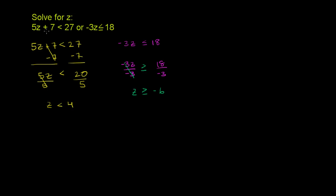Remember, it's this constraint or this constraint. The first condition boils down to z is less than 4, and the second one boils down to z is greater than or equal to negative 6. So our solution set is: z is less than 4 or z is greater than or equal to negative 6.